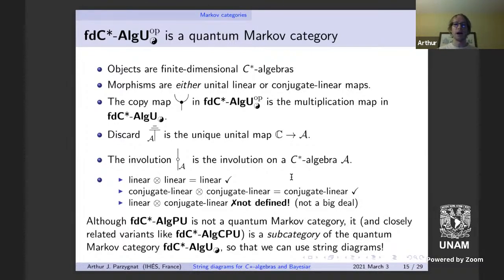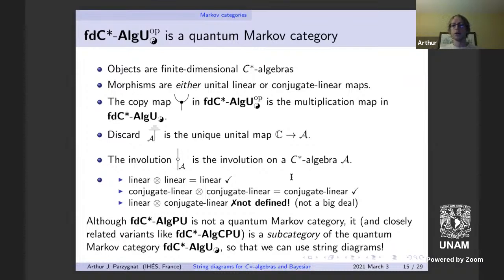Although the category of finite dimensional C*-algebras and positive unital maps is not a quantum Markov category, positive unital maps are the things that correspond to evolution in quantum systems — they take density matrices to density matrices, so that's the minimal requirement for evolution. Completely positive maps are an even stronger condition. Neither positive unital nor completely positive maps make sense as quantum Markov categories, but here's the important point: they embed inside one.